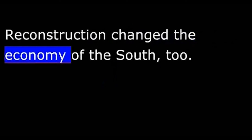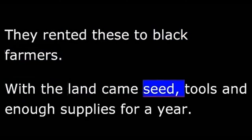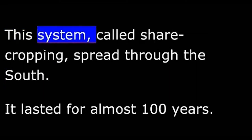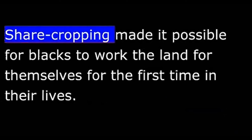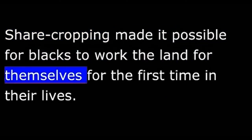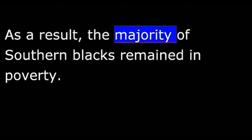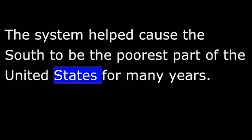Reconstruction changed the economy of the South too. White landowners broke up their big farms into smaller pieces of land and rented these to black farmers. With the land came seed, tools, and enough supplies for a year. In exchange, the owner would get a large share of the crop raised by the tenant farmer. This system, called sharecropping, spread through the South and lasted for almost one hundred years. Sharecropping made it possible for blacks to work the land for themselves for the first time in their lives, but it also made it difficult for them to earn enough money to improve their condition. As a result, the majority of Southern blacks remained in poverty, and the system helped cause the South to be the poorest part of the United States for many years.